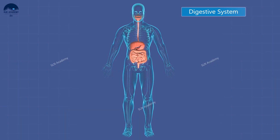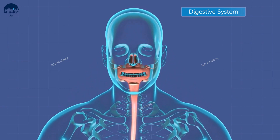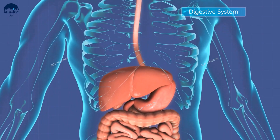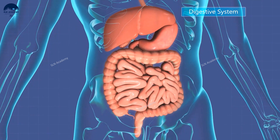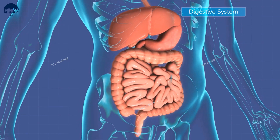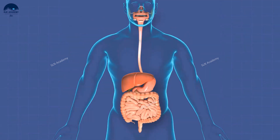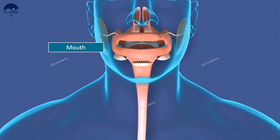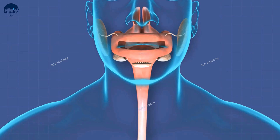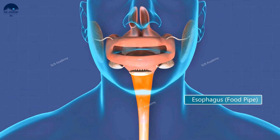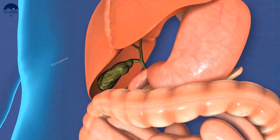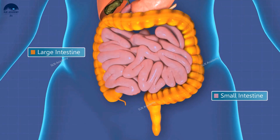Components of the digestive system. The digestive system is made up of a long tube of organs which includes the mouth, the pharynx, the esophagus, the stomach, the small intestine, the large intestine, and the anus.